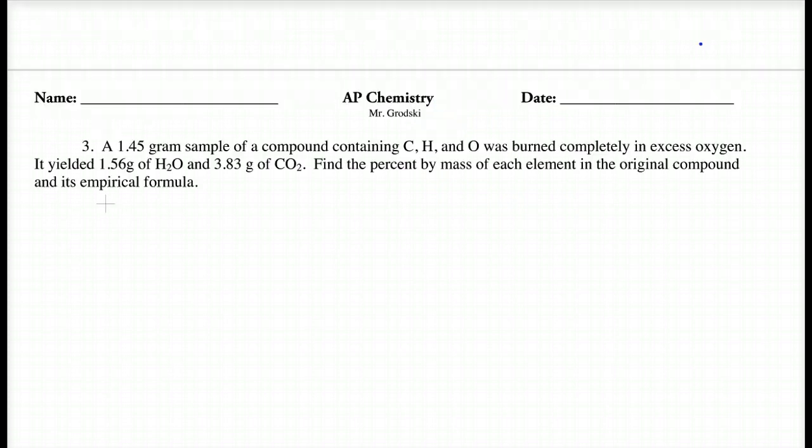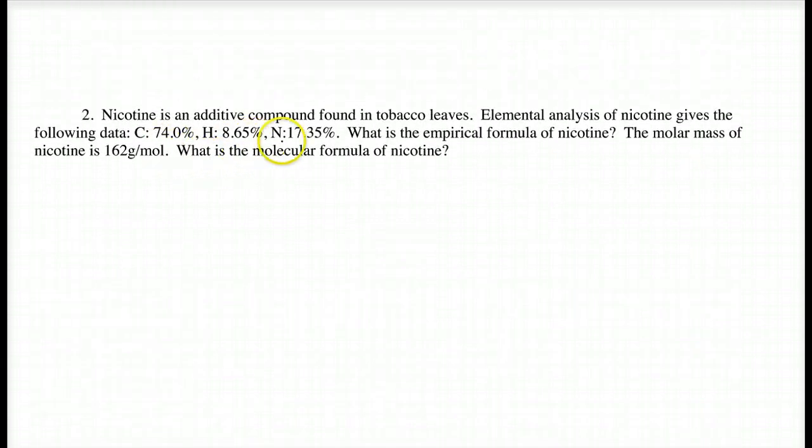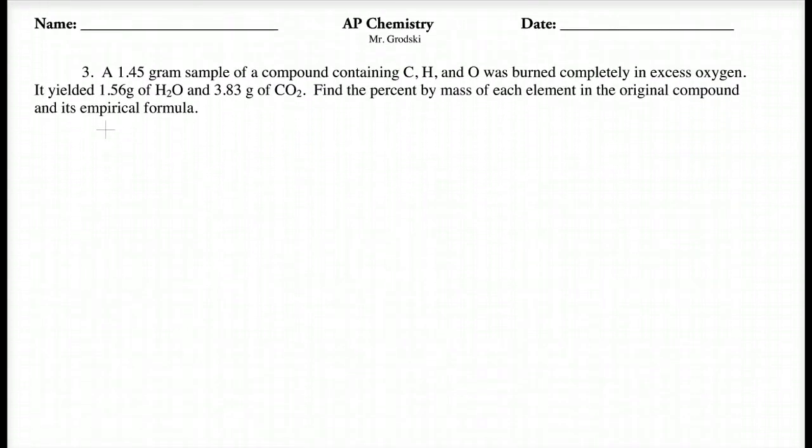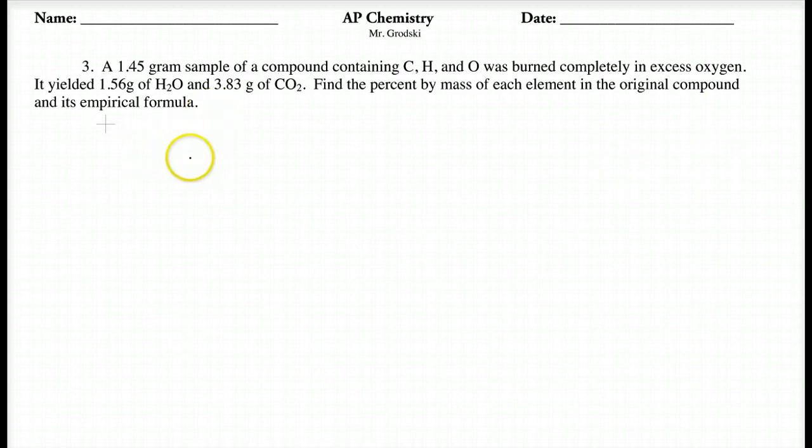If you notice in questions one and two, they just gave you the actual percentages. They got that from a laboratory technique, and one technique to get the percentages in order to build the empirical formula is something called combustion analysis. We're going to take an unknown compound that has carbon, hydrogen, and oxygen in it, and we're going to react it with excess oxygen. We're going to burn this organic compound that has the three elements listed here in excess oxygen, meaning we're going to make all of these react. We're going to drive the reaction to completion to the forward reaction.